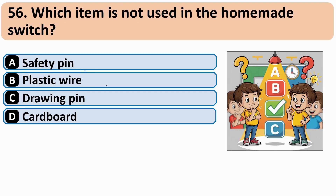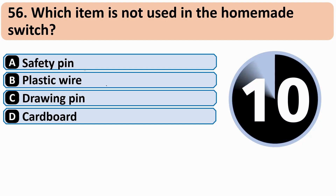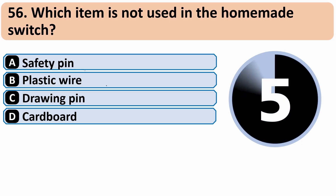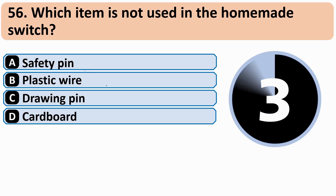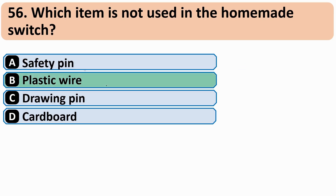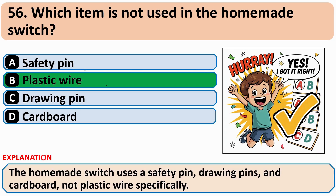Which item is not used in the homemade switch? The correct answer is B: Plastic wire.